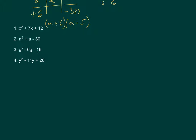Question 3, we have g squared minus 6g minus 16. So again, in our brackets, we're going to have g and g.